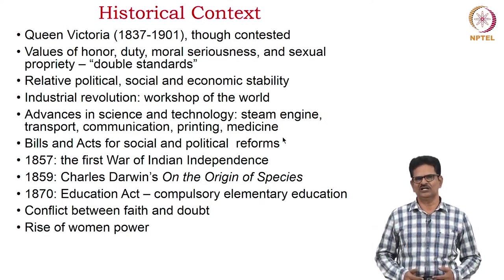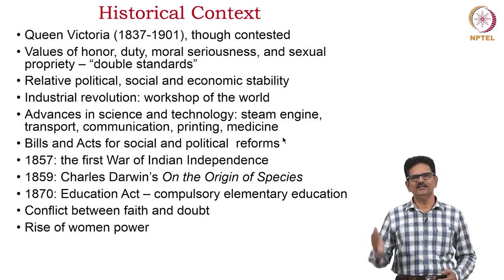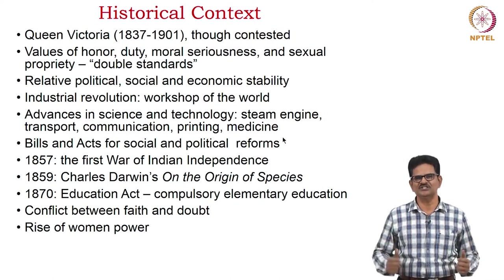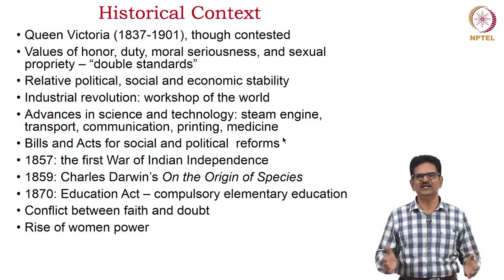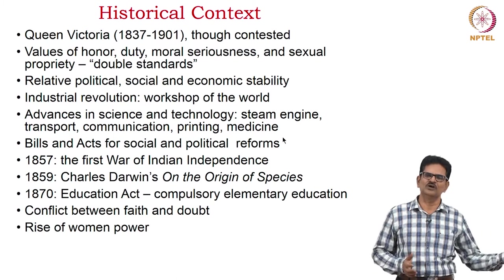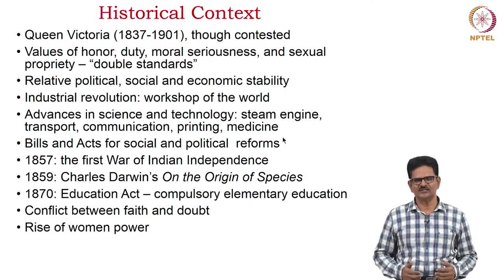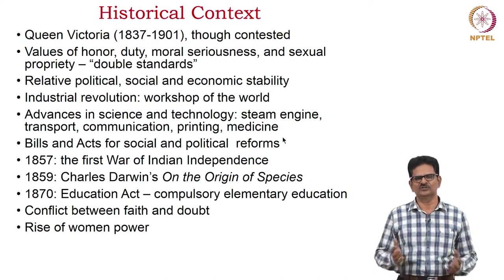There were many social and political reformations for which several bills and acts were passed during this period. Certain notable historical events we may mention here. One is the 1857 incident — the First War of Indian Independence — which shook the British Empire. In 1859, Charles Darwin published his famous book On the Origin of Species and shook the Western belief in the evolution of human beings from God. And then we have the 1870 Education Act, which brought in compulsory elementary education for all people in England.